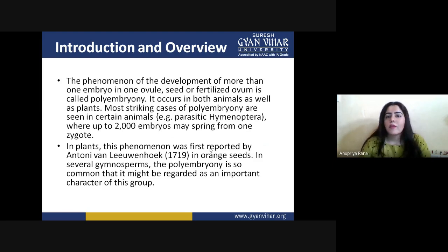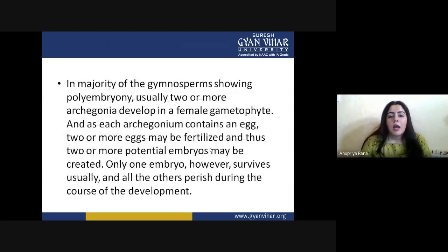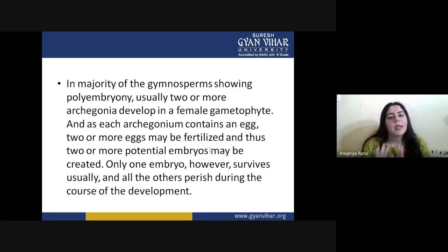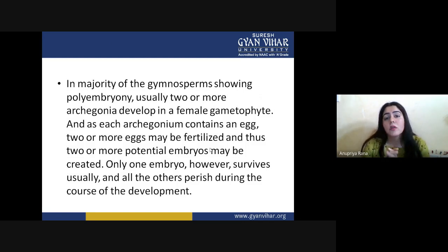Polyembryony is really very common in several gymnosperms, and that is why gymnospermic plants have a key point of introduction by having polyembryony as a reproductive phase. In the normal plant life cycle there are two phases: the sporophytic phase, where the plant is in the diploid phase with full chromosome number, and the gametophytic stage.